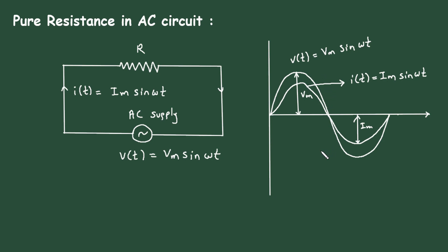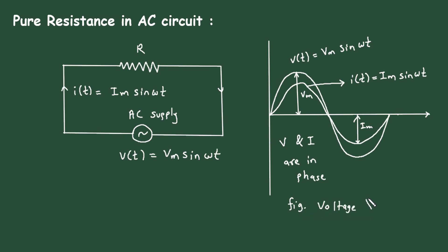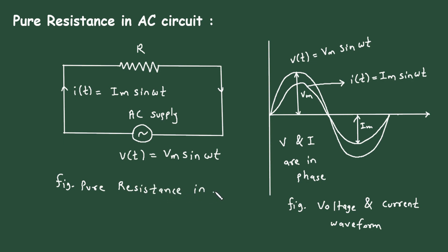So V(t) and I(t) are in phase — we can write V and I are in phase. The name of this waveform figure is the voltage and current waveform for pure resistance in AC circuit.